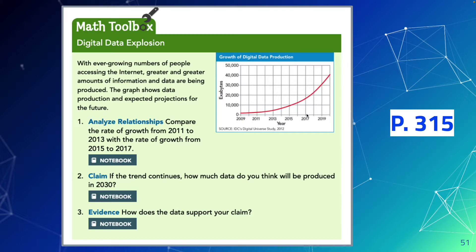Think of the graph like a hill — if you were skiing on it, how is the steepness different between those two periods? Question two: if the trend continues, how much data do you think will be produced in 2030? Use the graph to estimate. Question three: how does the data support your claim — what evidence backs up your answer?